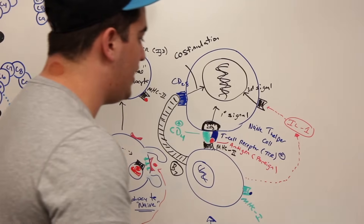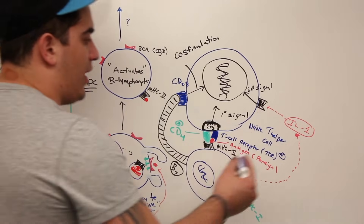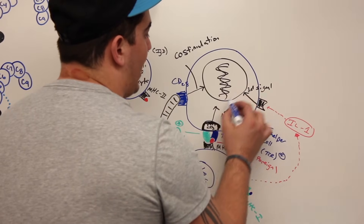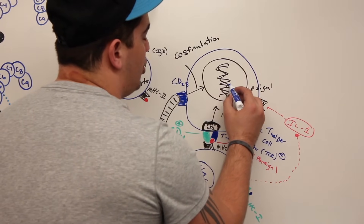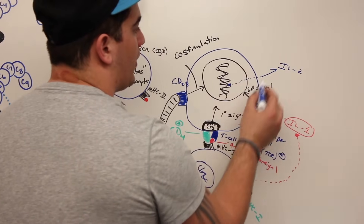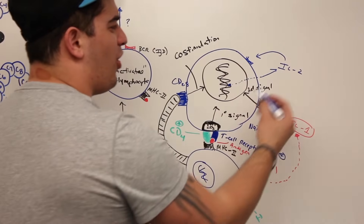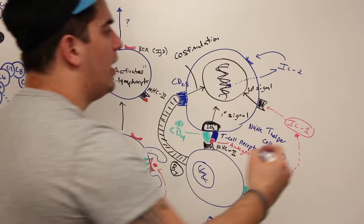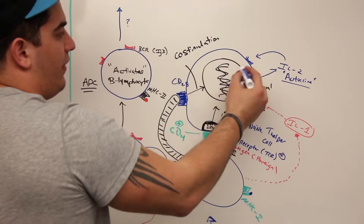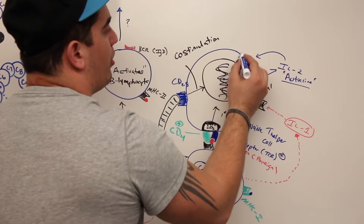So we have: a primary signal from MHC2 and CD4 interaction; the foreign antigen and T cell receptor activating CD3; B7 with CD28 activating co-stimulation; and interleukin-1 secreted by the macrophage triggering a third signal. Now the T cell has become activated. When it becomes activated, the T helper cell is no longer naive — it's an activated T cell, and it starts secreting certain genes leading to the production of interleukin-2.